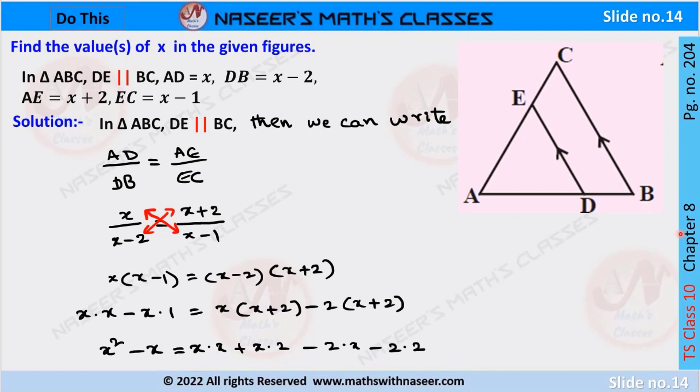Number 204, chapter on similar triangles. In triangle ABC, DE is parallel to BC and AD, DB, AE, EC values are given. From given data we write triangle ABC.